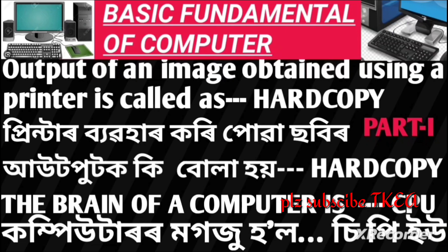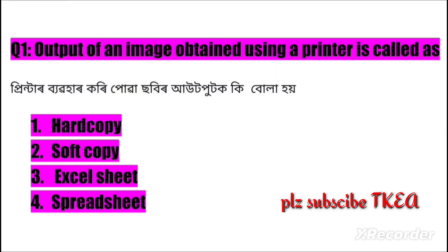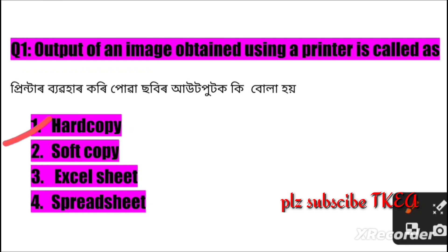Question number one: The output of an image using a printer is called as? Option one: hardcopy, two: softcopy, three: Excel chip, four: spare chip. The right answer is number one: hardcopy.